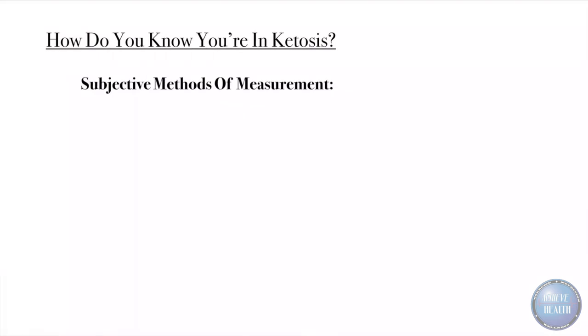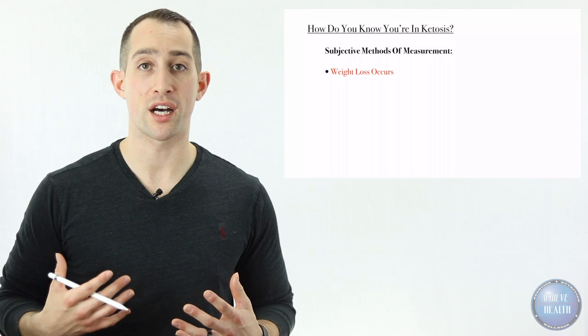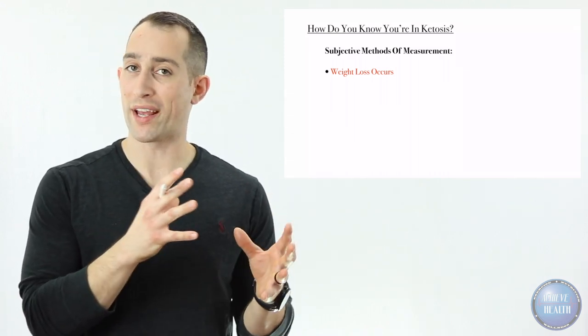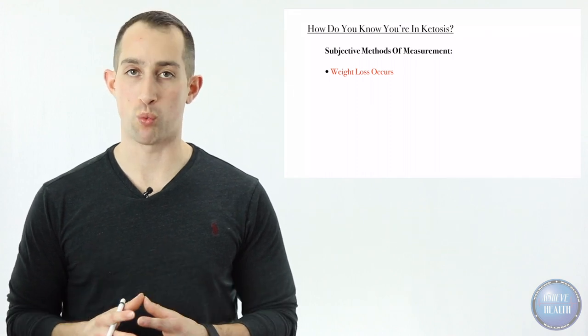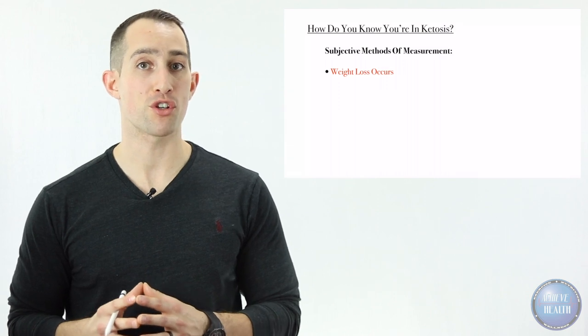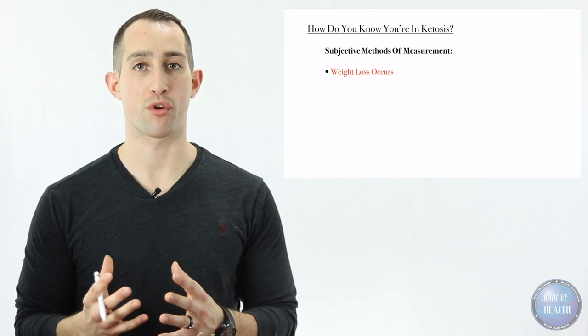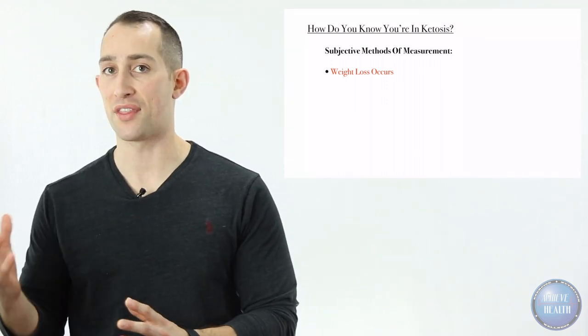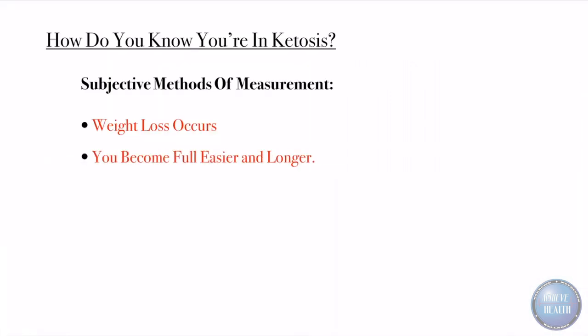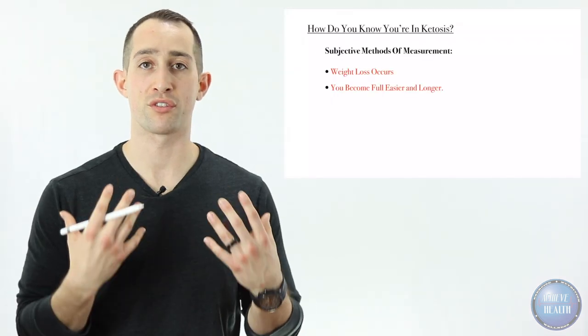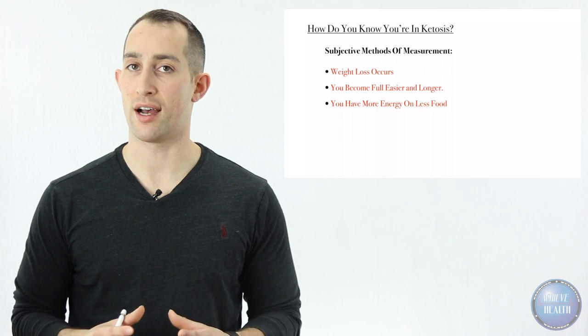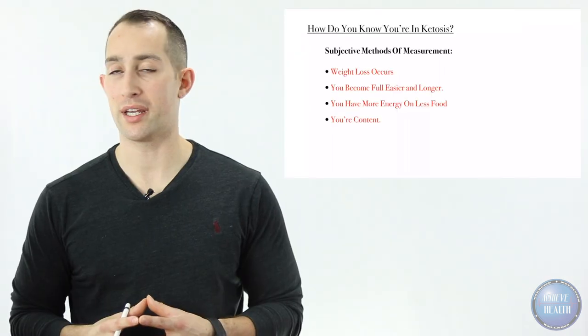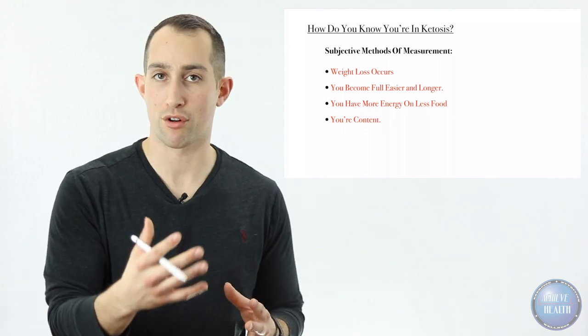Now let's go through some subjective methods of measurement. The first one could be you notice that weight loss occurs. Your clothes fit differently, they're a little bit baggy. One thing with weight loss occurring during this process is that in the beginning it can be water weight. On average, four to eight pounds in the beginning of going into ketosis could be water weight. When you're eating carbohydrates you're also consuming a large amount of water. Carbohydrates contain a lot of water, so the moment you remove them you're also removing a lot of water from your body. You become full easier and longer. You have more energy on less food. This is a great sign that you are in ketosis. You're content, meaning you're satisfied and you don't necessarily need that piece of cake or cookie.